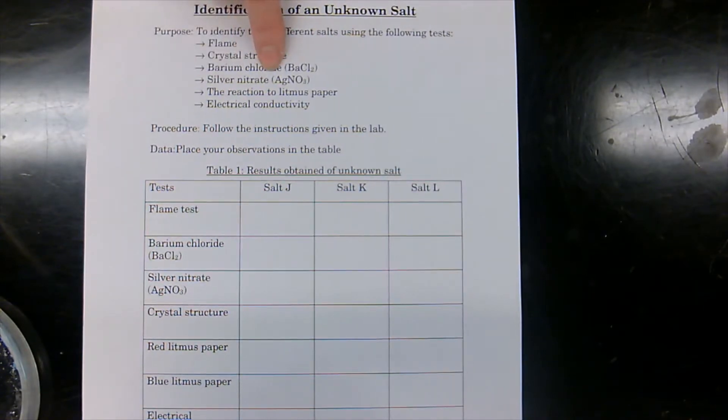And we're going to be doing a silver nitrate test. So the silver nitrate test, almost like the barium chloride test, this one is going to tell us if there is chlorine ions in our salt.